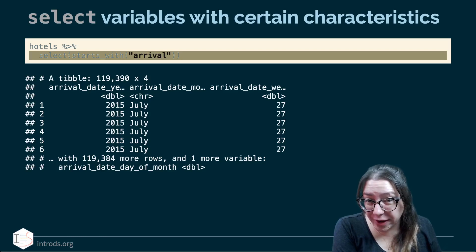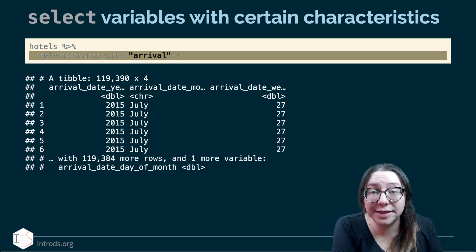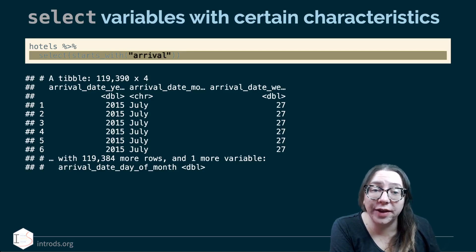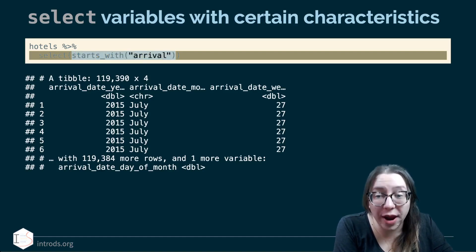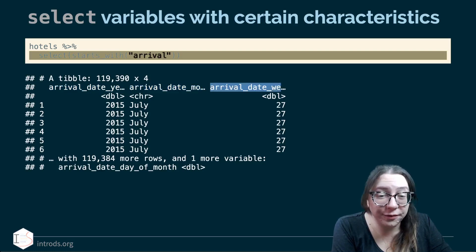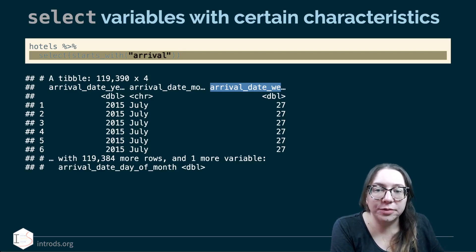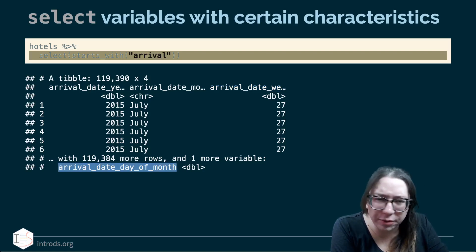Selecting by range isn't always useful because it requires that you know where your variables appear in the data frame, or that they were placed in a sensible way — which may not be true if you weren't the person who prepared the data set. Something more handy is to select variables with certain characteristics in their name. Here we're selecting all variables that start with the word arrival: arrival date year, arrival date month, arrival date week, and arrival date day of month.